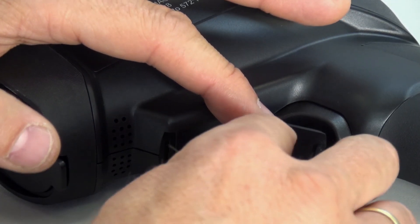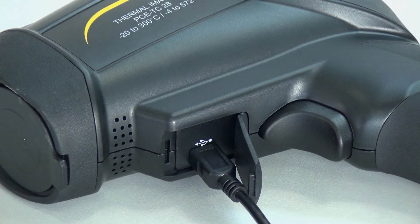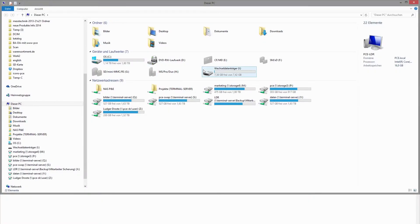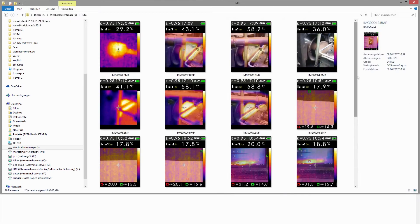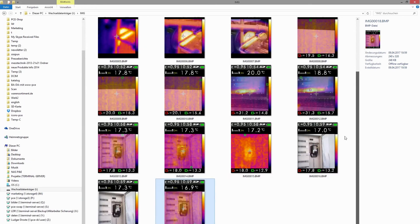Here we take our TC28 and simply connect it to the PC. It is recognized as a removable disk. That means I go into my file, have the pictures as BMP and can open them with every Windows tool.